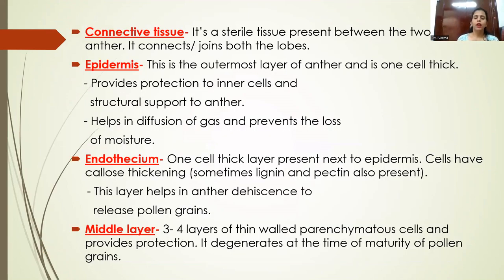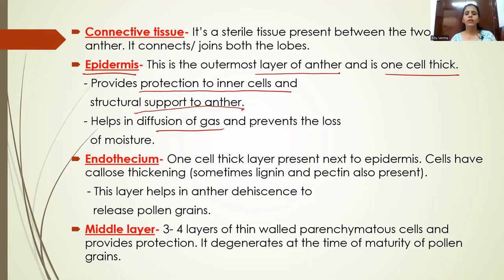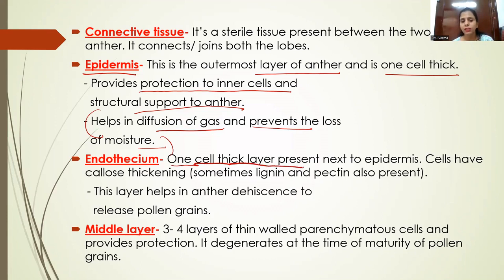The outermost layer of cells present around the microsporangia or anther is known as the epidermis. It is one cell thick. The function of the epidermis is to provide protection to the inner cells — including endothecium, middle layer, tapetum, and sporogenous tissue cells. It also provides structural support to the anther, helps in diffusion of gases like oxygen and carbon dioxide, and prevents loss of moisture from the anther.